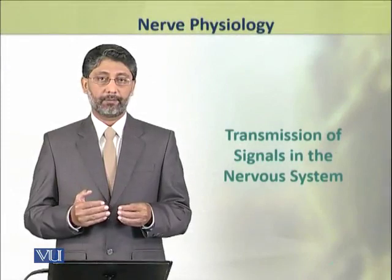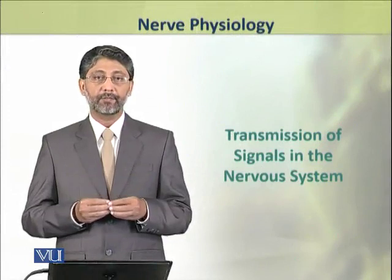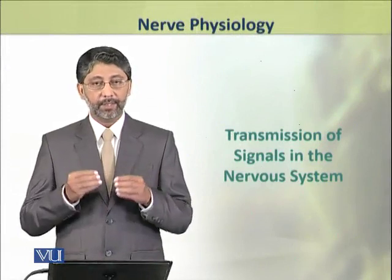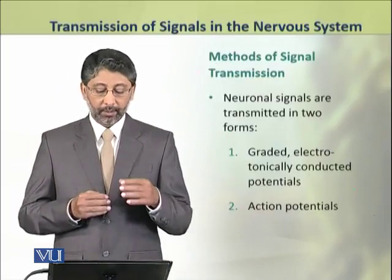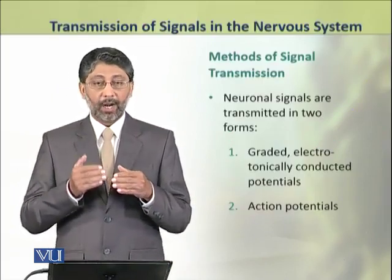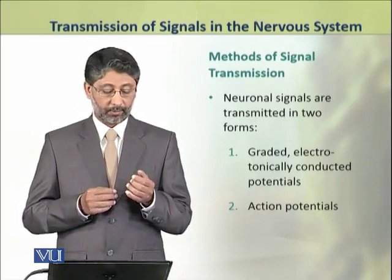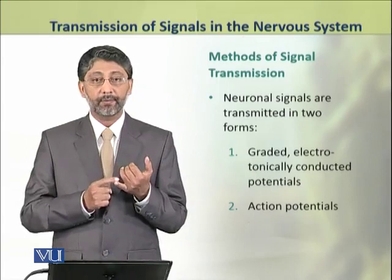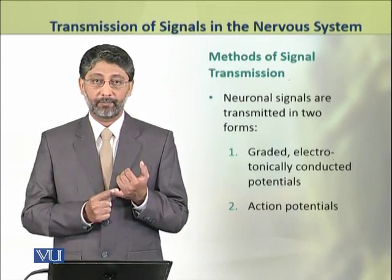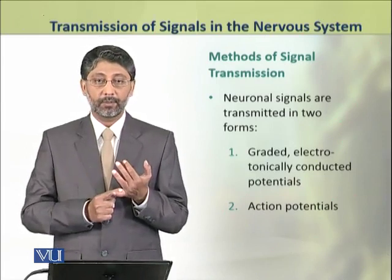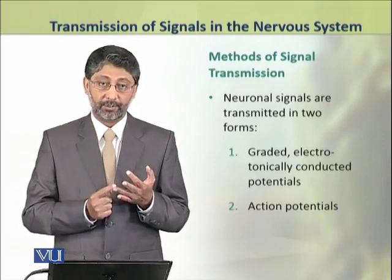In this module we shall discuss the methods of transmission of signals in the nervous system. Neuronal signals are transmitted in two forms: the first method is graded electrotonically conducted potentials, and the second form is action potentials.